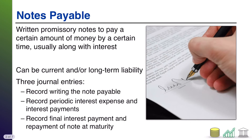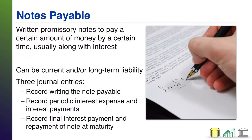Specifically focusing on notes payable today: notes payable are written promissory notes to pay a certain amount of money by a certain time, usually accompanied by interest. How does this differ from an account payable? An account payable is typically a day-to-day transaction between customer and seller — you buy a good, agree to pay later, get an invoice, and pay the invoice. A note payable tends to be a payment that occurs over a longer period of time, and it may be outside the course of normal business, so you want a written agreement to hold the other party accountable.